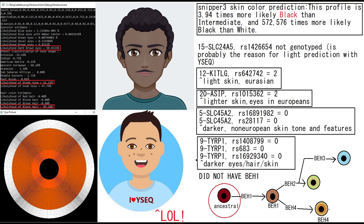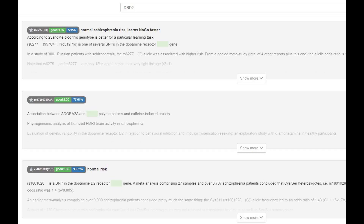When it comes to blue eye haplotypes, he did not even have BH1. So obviously no BH1 means no BH2, no BH3, no BH4 — none of the other blue eye haplotypes that come later. So just straight up an ancestral genotype in the OCA2 region.